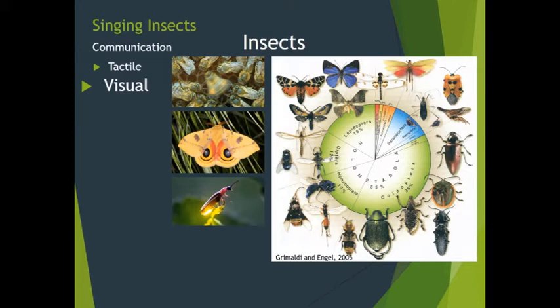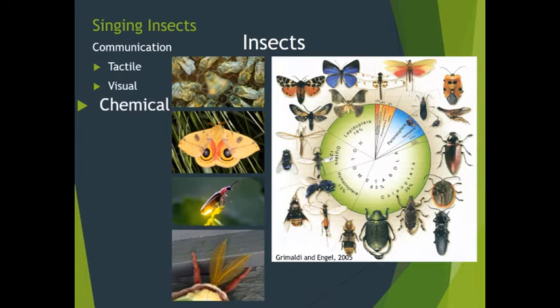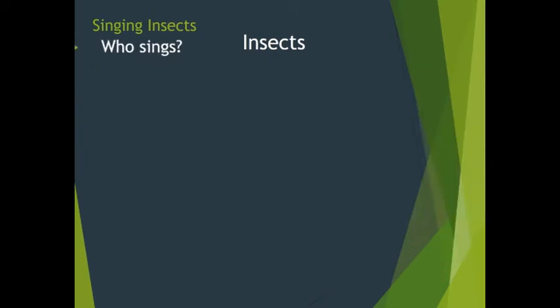By far the most common method of communication among insects is chemical. The release of volatile substances is critical for finding mates among many orders of flying insects. Leaving chemical information on surfaces for others to follow is found among non-flying groups such as the ants that find their way into our kitchens.